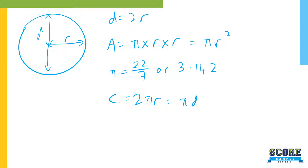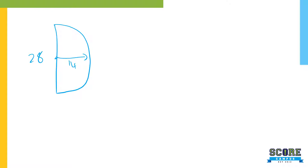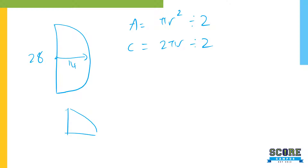What if you have half a circle with radius 14? The diameter is 28 (2 times 14). To find the area: πr² divided by 2. To find the circumference: 2πr divided by 2. For a quarter circle, divide your area and circumference by 4. Whichever fraction of a circle it is, divide by that amount.